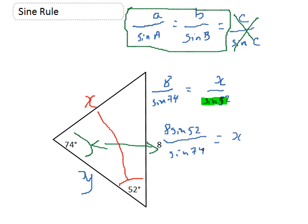That's going to give me the missing angle X. So on my calculator, that gives me a value of 6.56 to 2 decimal places. Okay, so X equals 6.56.